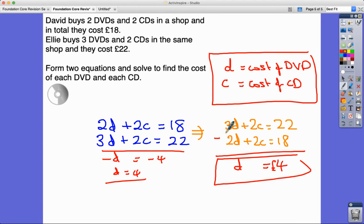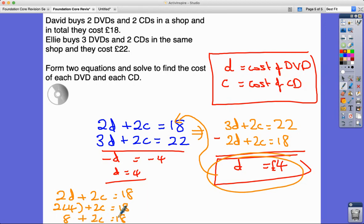Now that I know that piece of information, life is easy because all I have to do is use that to my advantage and substitute it back in to perhaps the first one here. So I know that 2d plus 2c equals 18. d is 4, so two times four add 2c equals 18. Two times four is eight, 8 plus 2c equals 18. Take away eight from both sides here, I get 2c equals 10, and so the cost of a CD is going to be equal to £5.